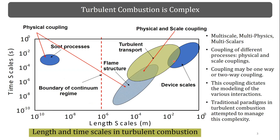Let's start with complications, and hopefully we'll get to some resolution beyond them. Even if you are in the gas phase, turbulent combustion is complicated — everybody working in this field agrees. This is essentially an indication of the length and time scales associated with combustion processes. You have a continuum regime limit, processes in the sub-continuum, things resolvable in DNS, and scales corresponding to the flame, turbulence, and device scales.